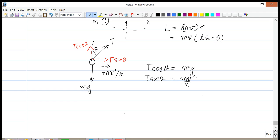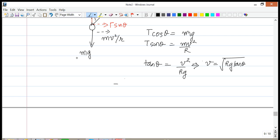Now that I have this, I divide the second equation by the first and I end up getting tangent theta equals v squared over RG. This gives me V equals square root of RG tangent of theta. I need to remember that R is equal to L sine theta, so V is equal to square root of LG sine theta tangent theta.